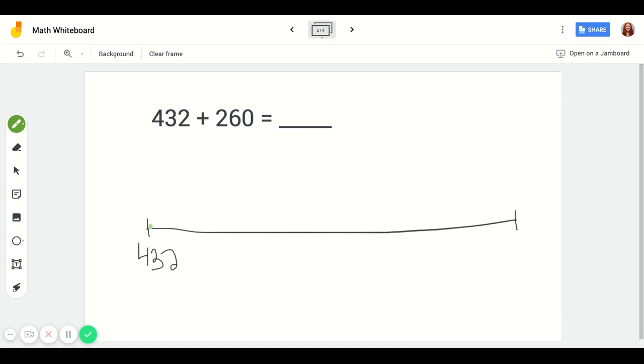And last time we started with the hundreds place, so maybe this time we'll start somewhere else. There's a 2 here in our hundreds place, a 6 here in our tens place, and we have a 0 again in our ones place.